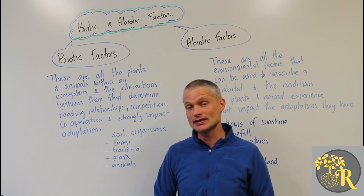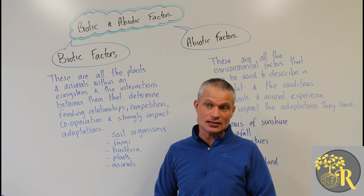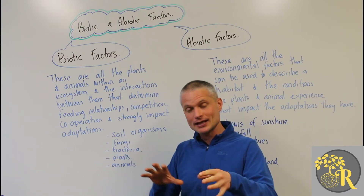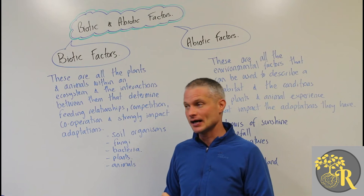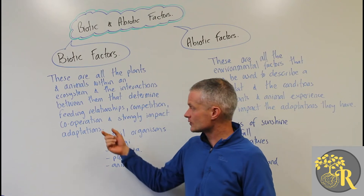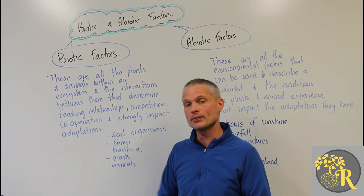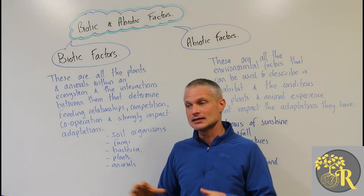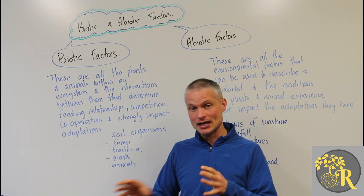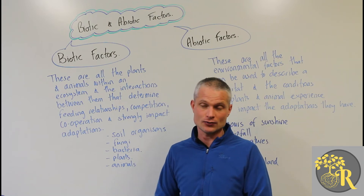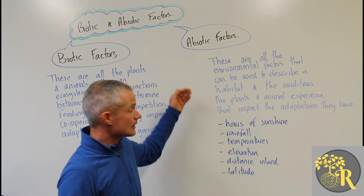By understanding those feeding relationships, we can better design an agricultural system that has a complexity of compatible animals that are not strongly competing against each other, but are more in a cooperative existence, depending on how we manage their movements and their interactions with each other.